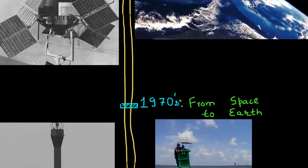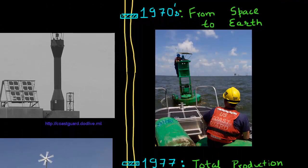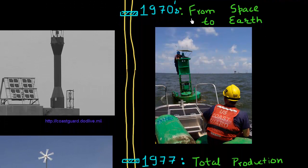Around 1970s was the time when these solar cells came from space to Earth. There was a major driving force.